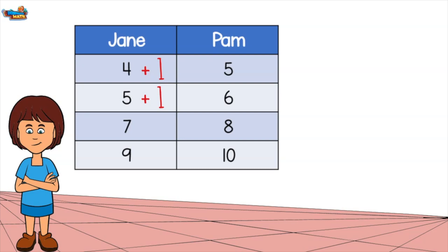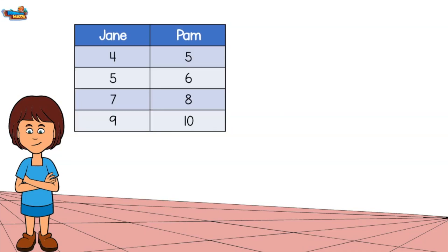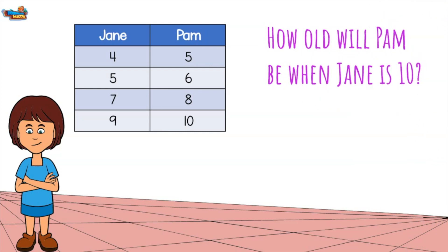The rule is to add 1 to Jane's age to get Pam's age. Now, let's put the rule to use. How old will Pam be when Jane is 10? The rule tells us to add 1 to Jane's age to get Pam's age. 10 plus 1 equals 11.